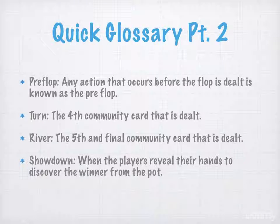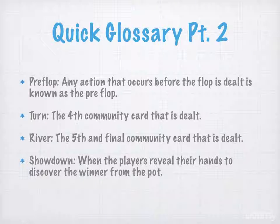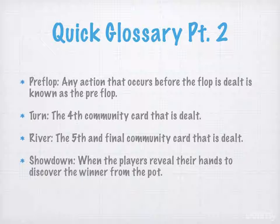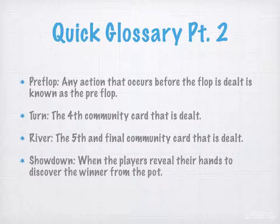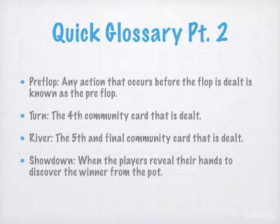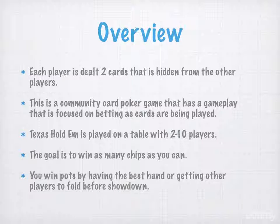Any action that occurs before the flop or community cards are dealt is known as 'pre-flop.' The 'turn' is the fourth community card dealt — you get three cards for the flop and then the fourth card is the turn. The fifth and final community card dealt is known as the 'river.' Lastly, 'showdown' refers to when players reveal their hands to discover the winner from the pot. This happens after the river card has been dealt.